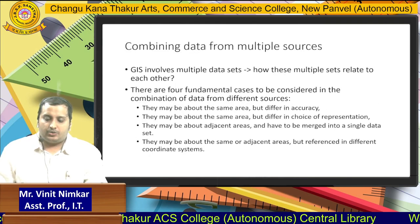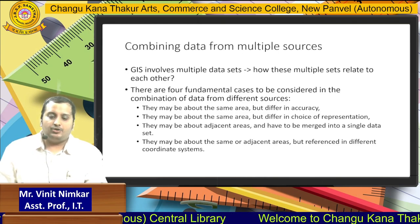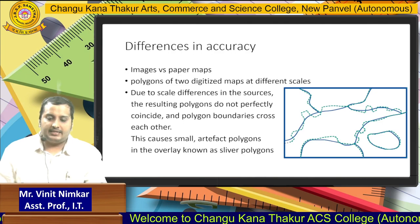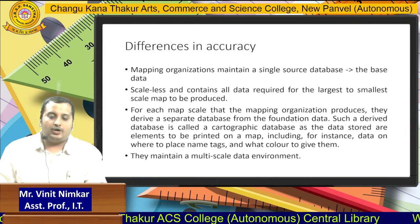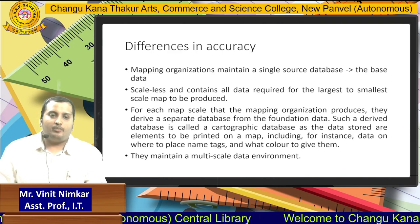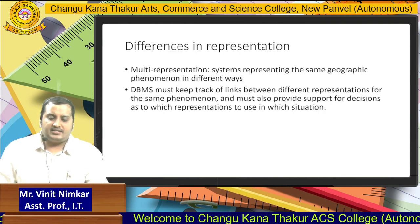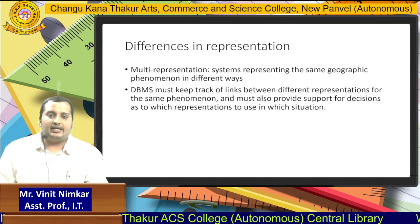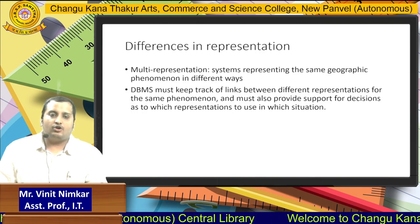Combining data from multiple sources: it is not required that we use data from only one source in our map — we can use data from multiple sources as well. Differences in accuracy are shown in the diagram. These differences in accuracy mainly occur because of map scaling. The map scale from which we acquired data and the map scale we are putting data into — if they are different, there will be differences in accuracy.